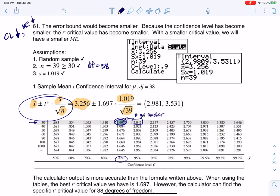And when that number gets smaller, that means quite literally this expression, this margin of error is going to be smaller. So I crunched my confidence interval and I got 2.981 to 3.531.